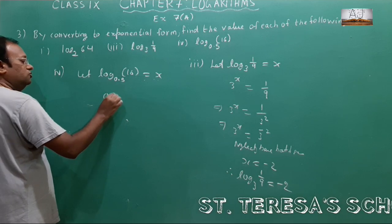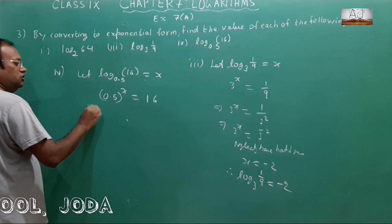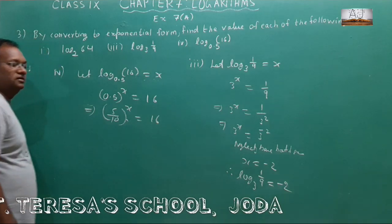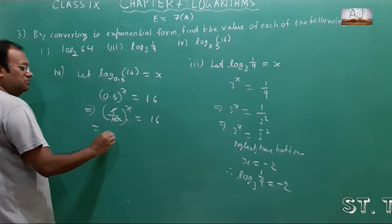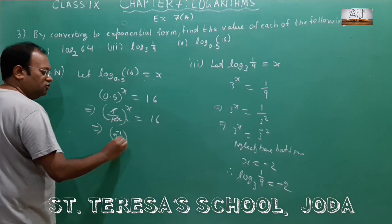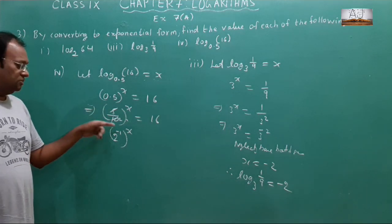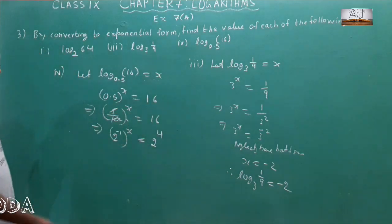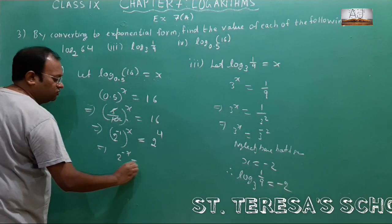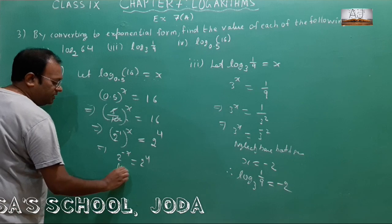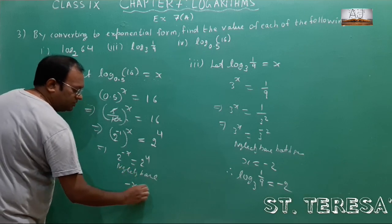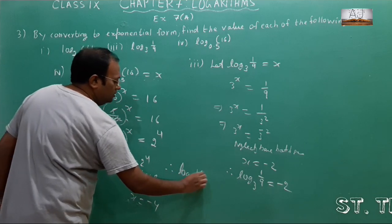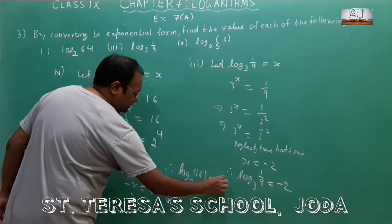Now the fourth bit. Convert to exponential form: 0.5 to the power x equals 16. Now 0.5 is 1 by 2, which equals 2 to the power minus 1. So 2 to the power minus x equals 16, which equals 2 to the power 4. Neglecting the base, minus x equals 4, so x equals minus 4. Therefore the value of log base 0.5 of 16 is minus 4.